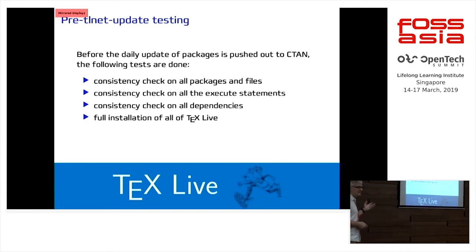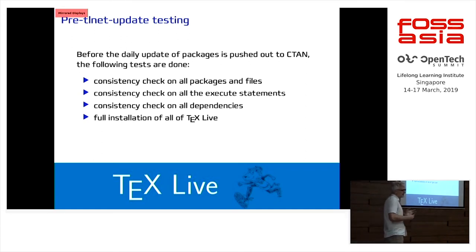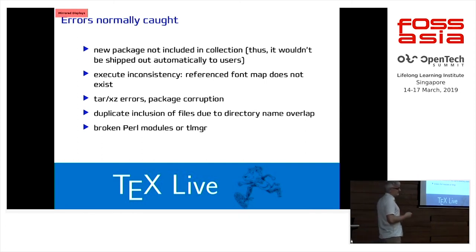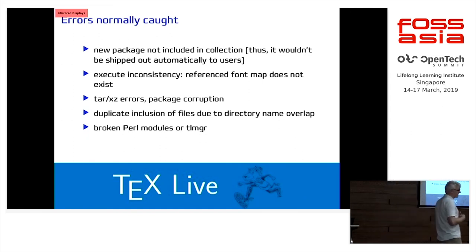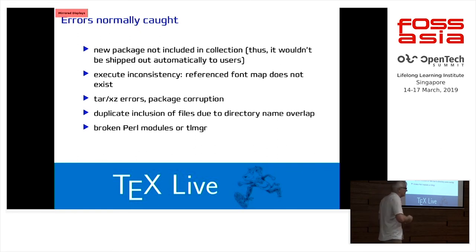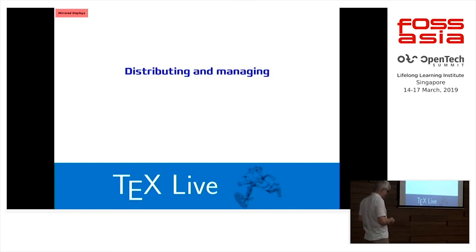Many of these things are cron jobs — all like scripts — and many of the scripts are just grep, sed, sort, uniq, whatever you always do on this kind of stuff. If you have a text-based database, it's quite nice. What errors are normally caught: new packages added but forgotten in a collection; inconsistency with font maps — that often happens; package corruptions from TAR and XZ compression; duplicated file inclusion in a package; and bugs in post-install scripts where nothing works. All these errors are normally caught.